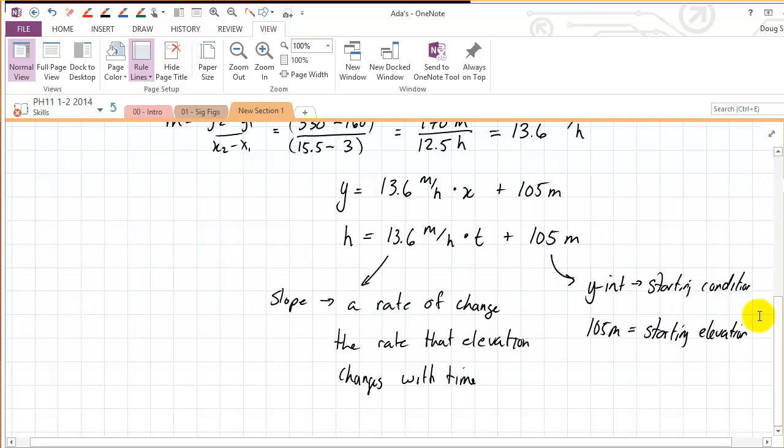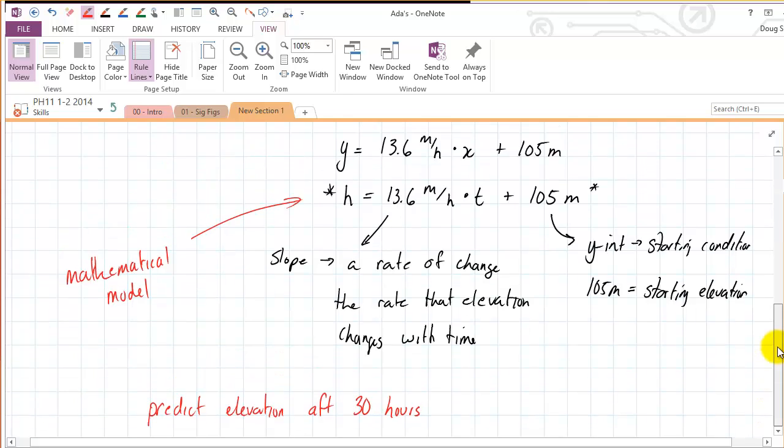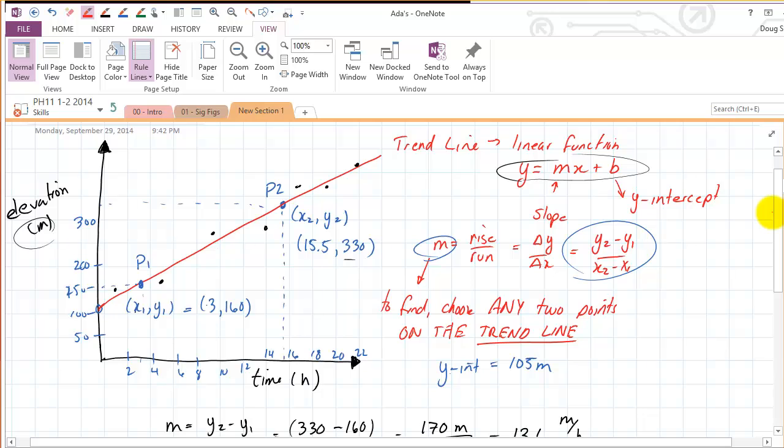So then the last thing we could do with this equation, this guy here, is use it to make predictions. So what we've done is we're creating a model. This is a mathematical model. It's a mathematical model that represents, or it models how this person is hiking. So we can use that model to make a prediction. So for example, predict elevation after, say, 30 hours. So does that make sense, actually, even as a question? Well, if, say, this is representing a large or long, slow hike up some mountains.